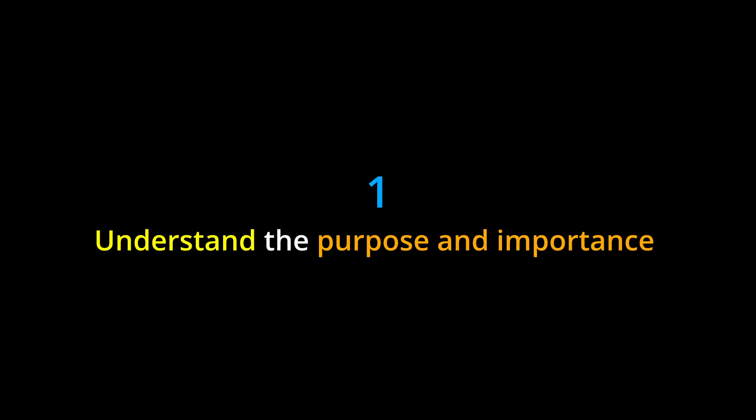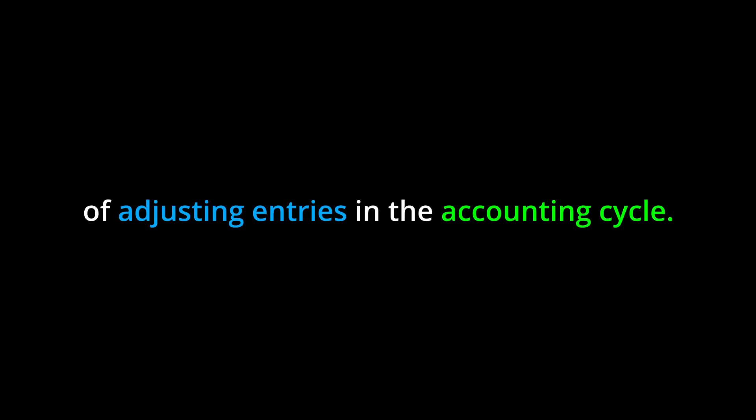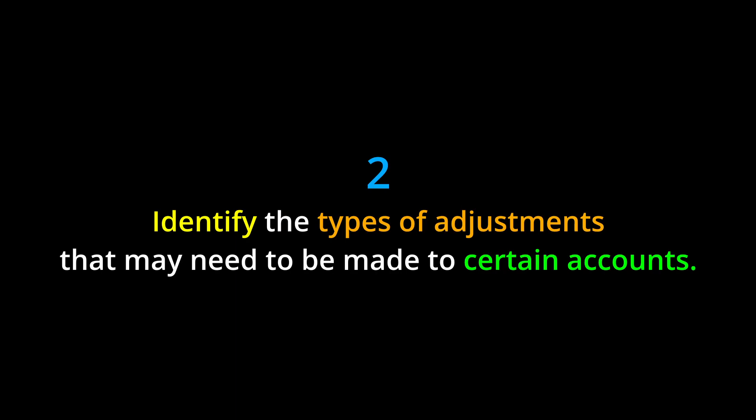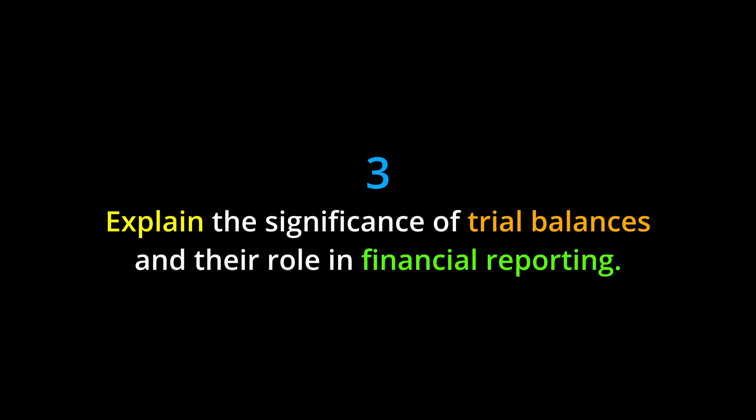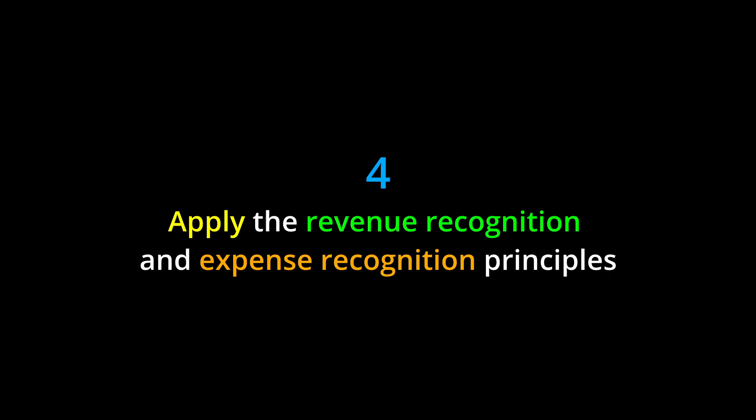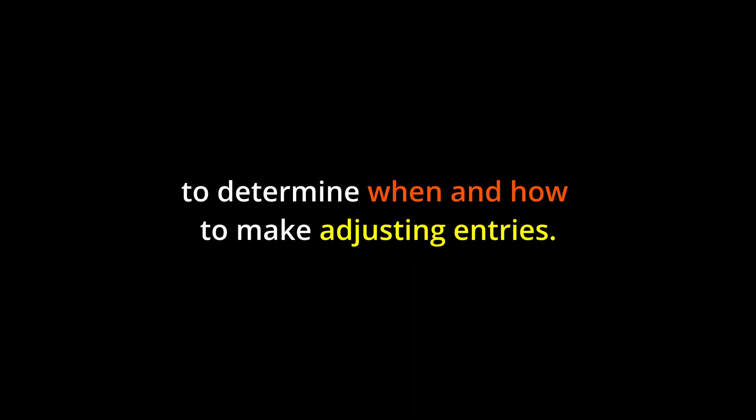Learning objectives. By the end of this chapter, you should be able to: 1. Understand the purpose and importance of adjusting entries in the accounting cycle. 2. Identify the types of adjustments that may need to be made to certain accounts. 3. Explain the significance of trial balances and their role in financial reporting. 4. Apply the revenue recognition and expense recognition principles to determine when and how to make adjusting entries.